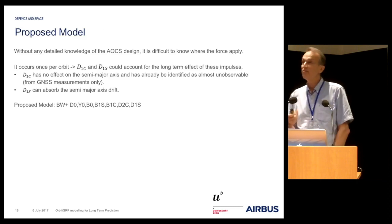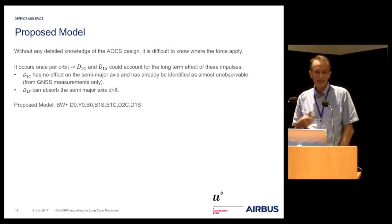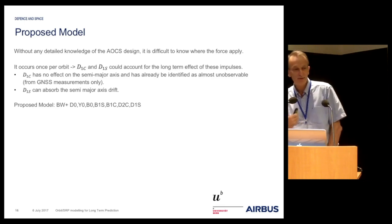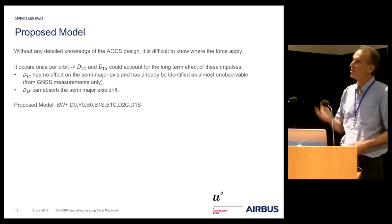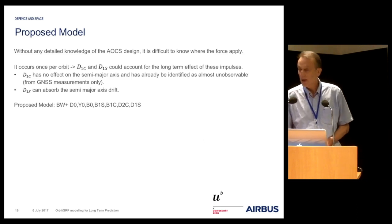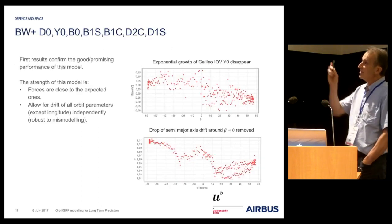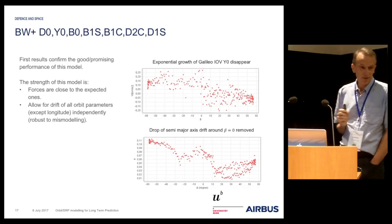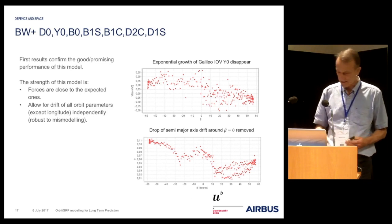Something occurs during eclipse, and it occurs once per orbit. One idea was to add D1C and D1S again, but we already saw that D1C cannot be added because it would degrade the semi-major axis estimation. So we added D1S only, because D1S can absorb the semi-major axis drift. After adding D1S, we got updated curves for IOV Y0 and we see that the exponential drift disappeared, and the drop of the semi-major axis reconstruction disappeared also. We are now very close, I think, to the reality of the semi-major axis drift of the orbit.